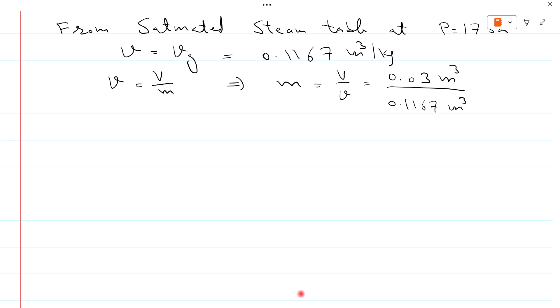And specific volume is 0.1167 cubic meter per kg. So specific mass will be equal to 0.03 divided by 0.1167 is equal to 0.257 kg. This meter cube will be cancelled with meter cube.